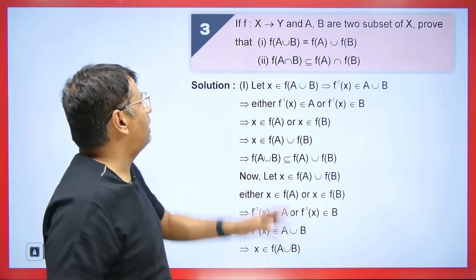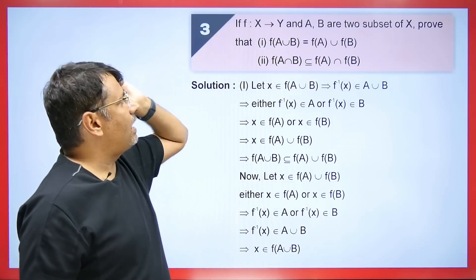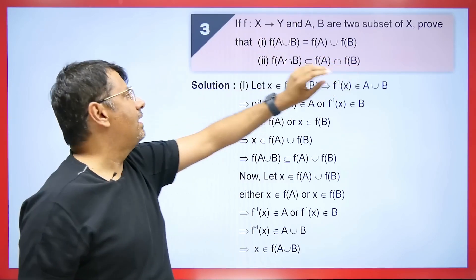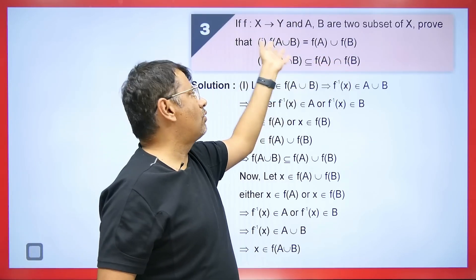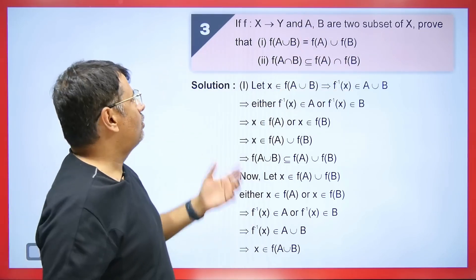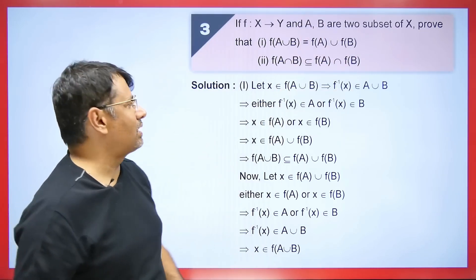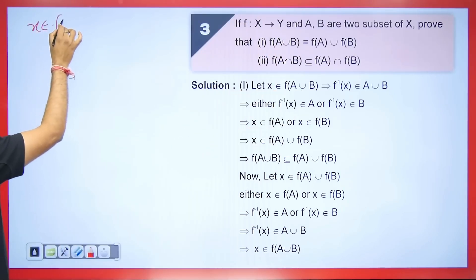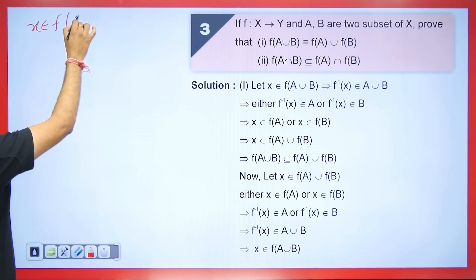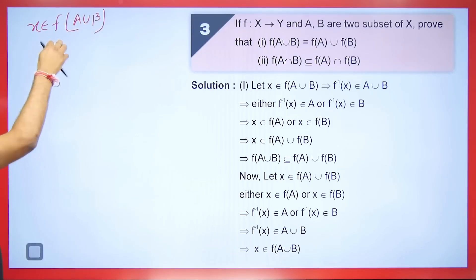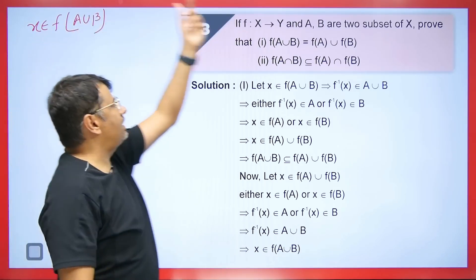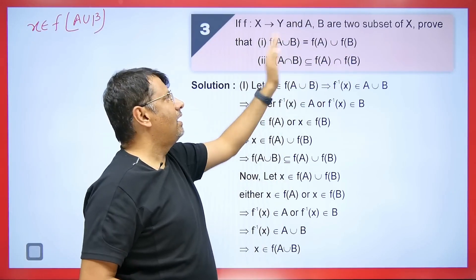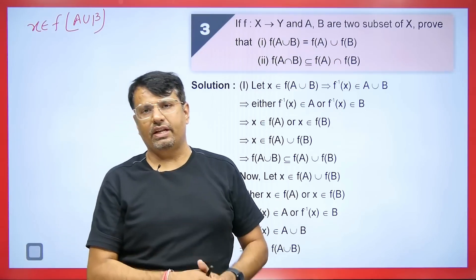Let's look at this question: If F: X → Y and A, B are two subsets of X, prove that F(A ∪ B) = F(A) ∪ F(B). First, take an element x belonging to F(A ∪ B). If we can show it also belongs to F(A) ∪ F(B), and conversely, that will prove equality as both are subsets of each other.